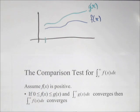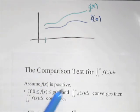So one thing to remember is you can only use the convergent improper integral to show convergence, and you have to show that the one you're testing is less than it.